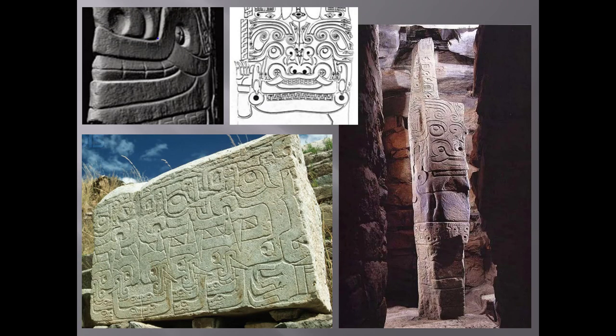The anthropomorphic Lanzón Stela, with its feline head and human body, stands at the center of the Old Temple. Worshippers would encounter it after navigating a labyrinthine maze of tunnels. Imagine seeing it emerge out of the dark. Note that here again we see a mixture of human and animal features, combined in a complex and visually confusing style that intermingles figures. Remember what that style is called?